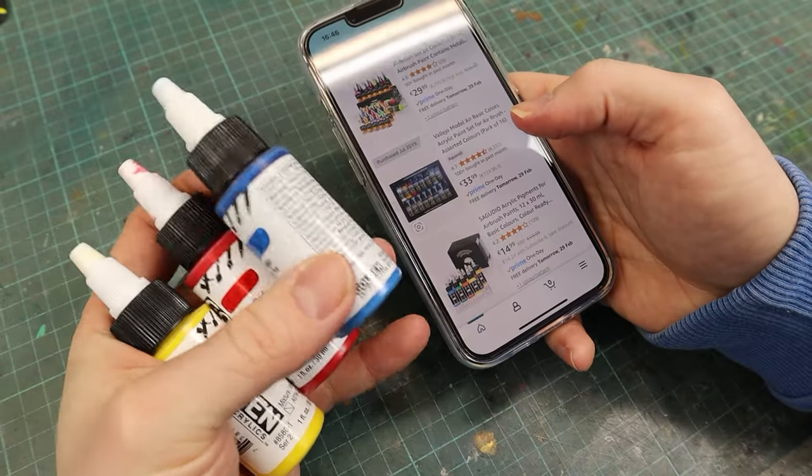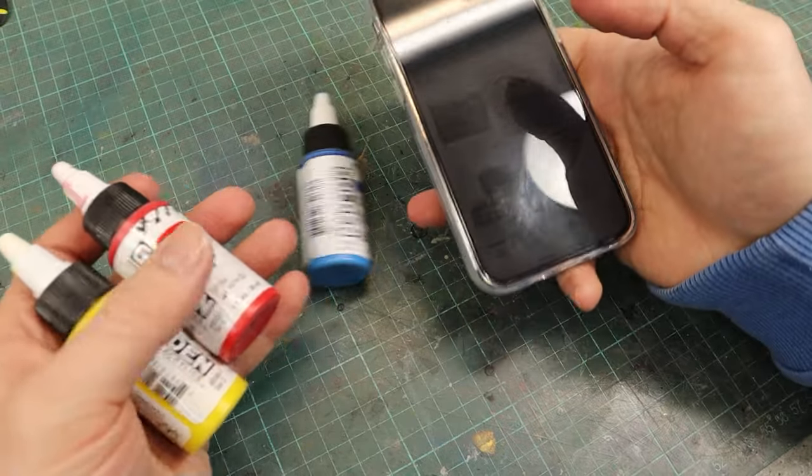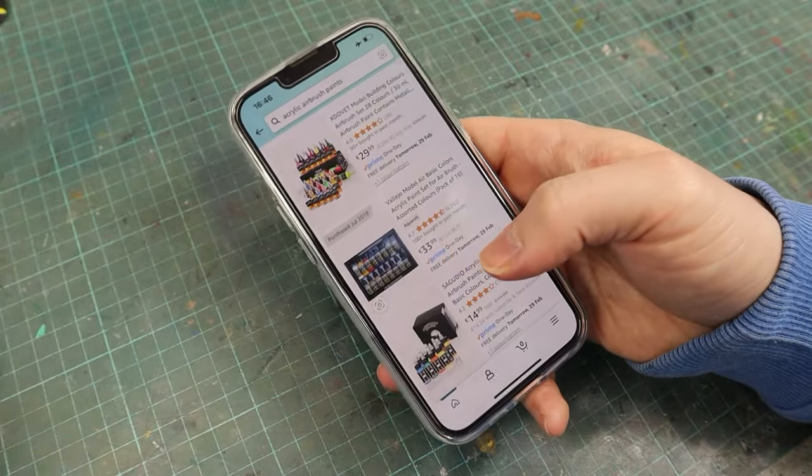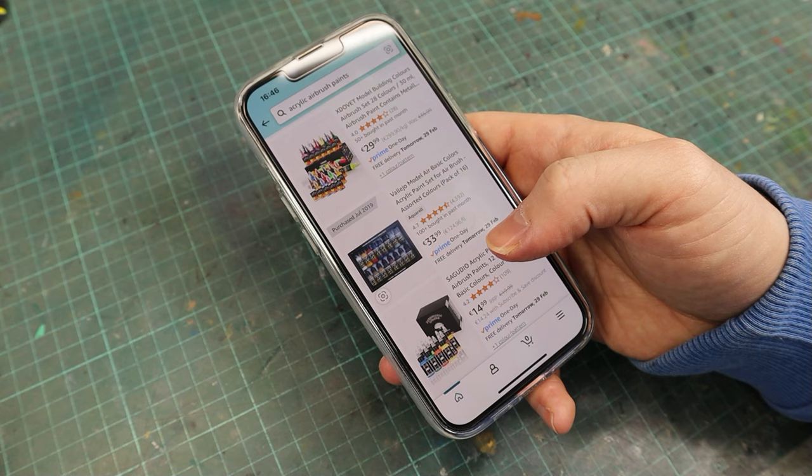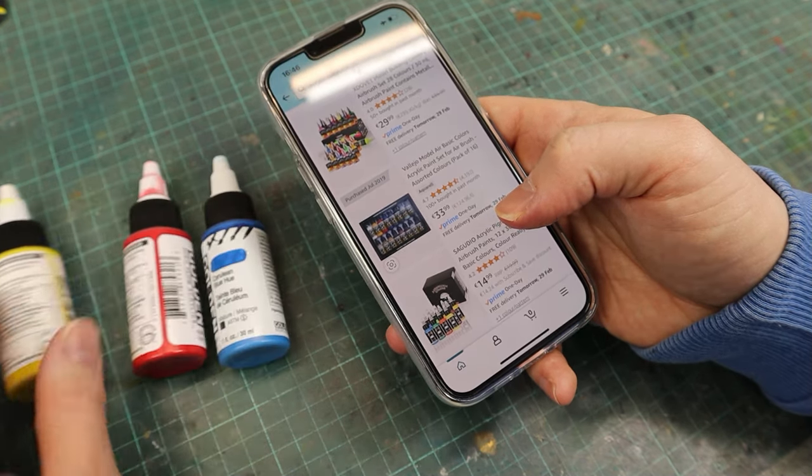But then my brother got me a set of golden acrylics for Christmas. Now I'm left wondering, should I stick to Vallejo or are golden acrylics performing better? Let's put them to a side-by-side comparison and find out whether it might be better to change brands.